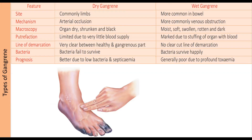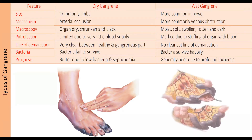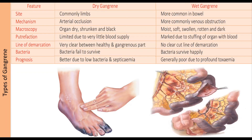This is a picture of dry gangrene. You can see the line of demarcation is well drawn, separating the healthy tissue from the black, mummified dry part. In this image of the small intestine showing wet gangrene, there is no line of demarcation, and the organ is swollen and dark with moisture.